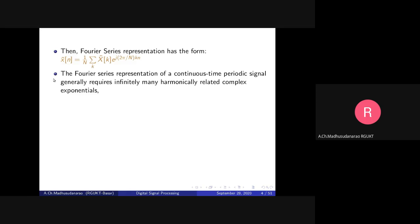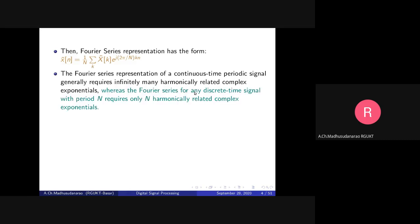Fourier series representation of a continuous time periodic signal generally requires infinitely many harmonically related complex exponentials — for example, a square wave has a linear combination of odd harmonics up to infinity. Whereas the Fourier series for any discrete time signal with period N requires only N harmonically related complex exponentials; you don't require infinite harmonics.